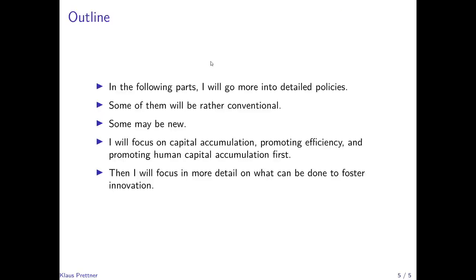In the following parts, I will discuss these detailed policies, structured according to the four items just presented. Some will be rather conventional policies, such as tax credits when a firm invests. Some may be new, such as alternatives or complements to the patent system in order to foster innovation and invention. Part two will focus on capital accumulation, promoting efficiency, and promoting human capital accumulation through education. Part three will focus in more detail on what can be done to foster innovation and invention. Thank you.